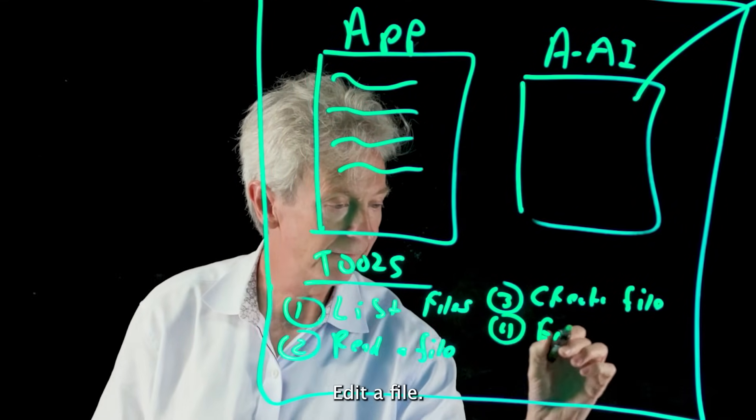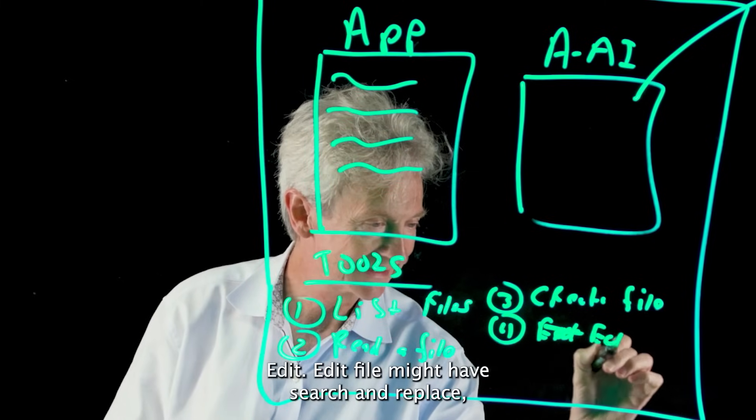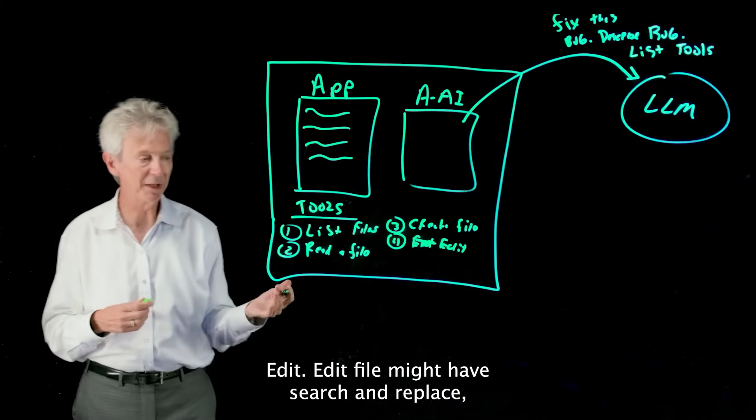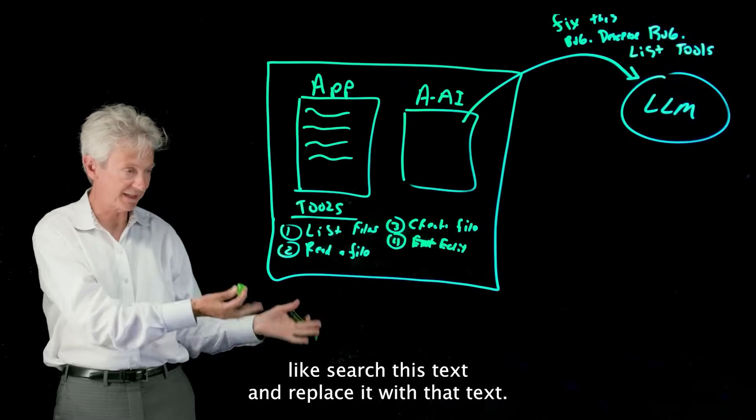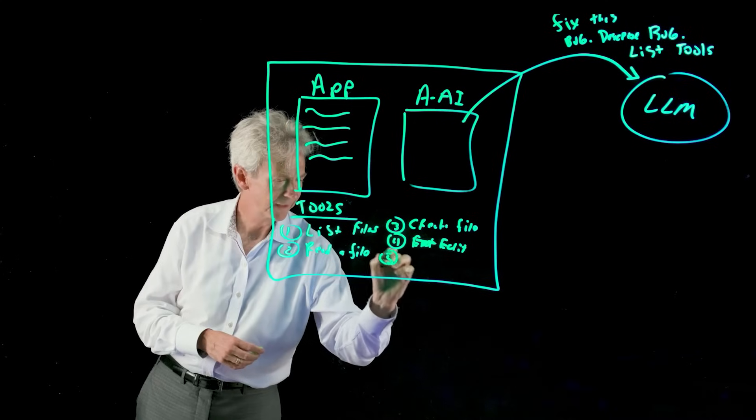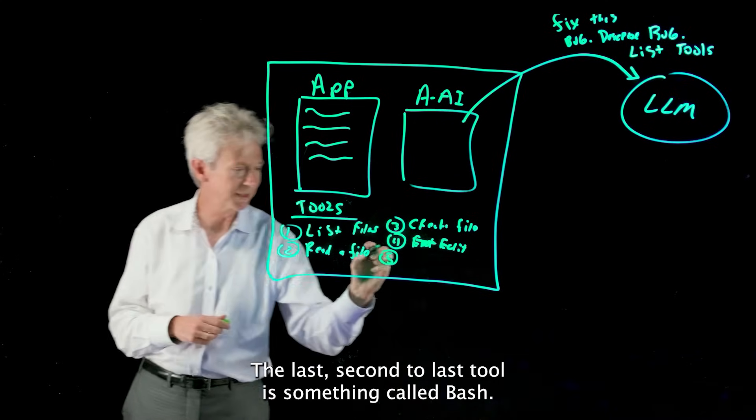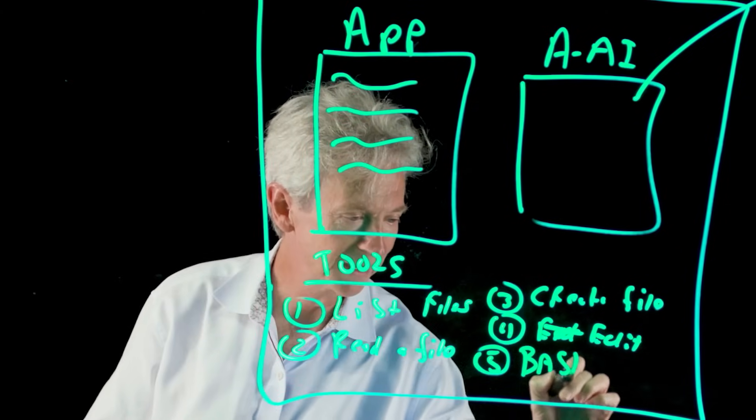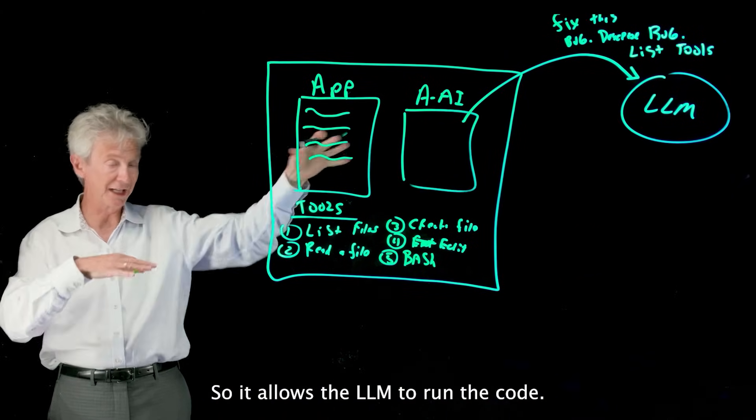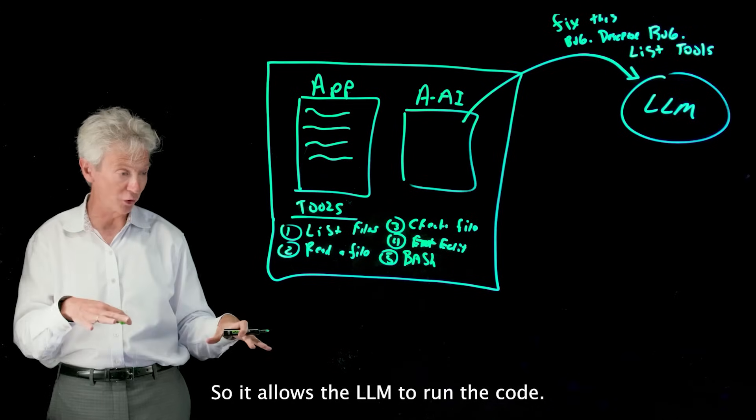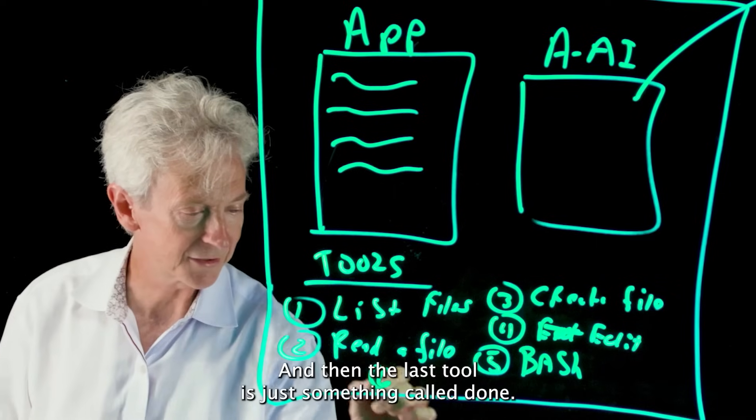Edit a file - edit file might have a search and replace like search this text and replace it with that text. The last, second to last tool is something called bash and this runs like a Python program or something like that on your computer, so it allows the LLM to run the code.